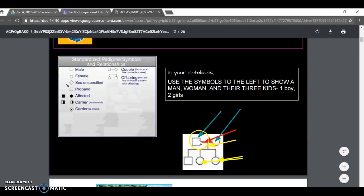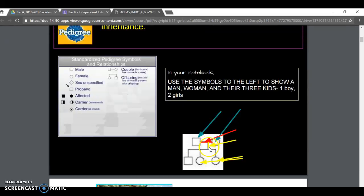There's a guy here, there's a girl, there's a horizontal bar meaning that they've reproduced. They've had sex, basically, and they've had some kids.